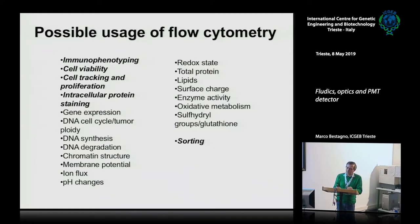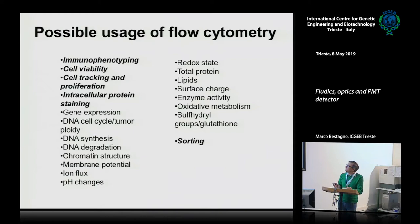There are many possible applications of flow cytometry. The most important ones are immunophenotyping, cell viability, cell proliferation, and intracellular protein staining, but you can also apply this technique to gene expression, cell cycle, DNA analysis, membrane proteins, and many other applications. Once you have identified sub-populations, you can actively sort them to isolate populations from complex mixtures.